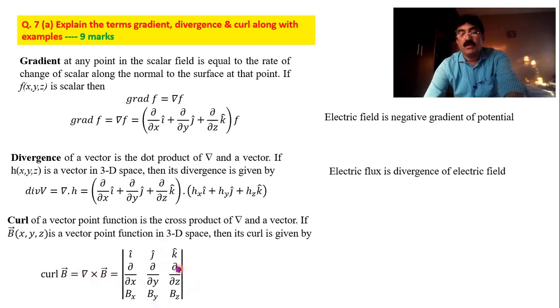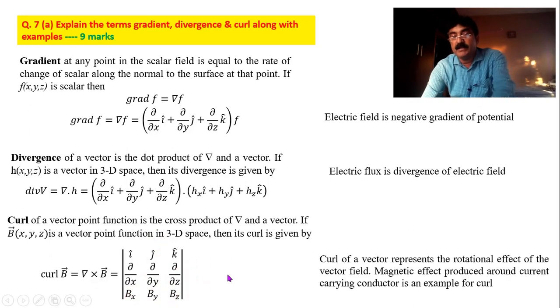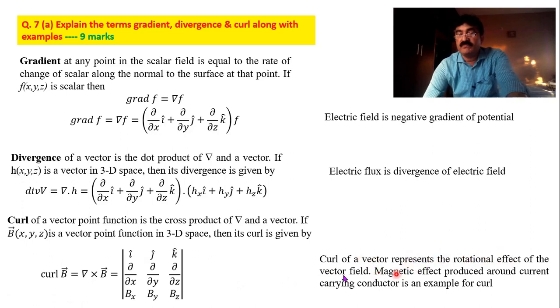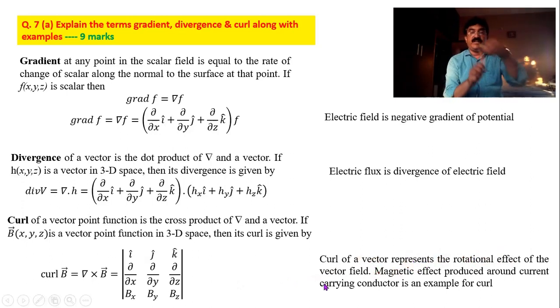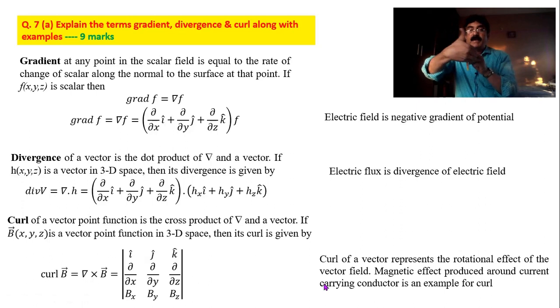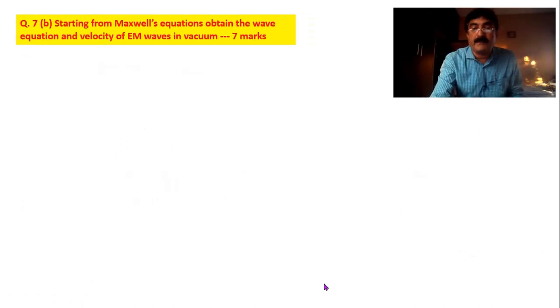And cross product you know how to find out with the help of matrix. This you already studied in Physics of Oscillations. And the example: curl represents rotational effect. This is a straight conductor. Straight conductor with current passing. Magnetic field is curling. So magnetic field is the best example for curl.